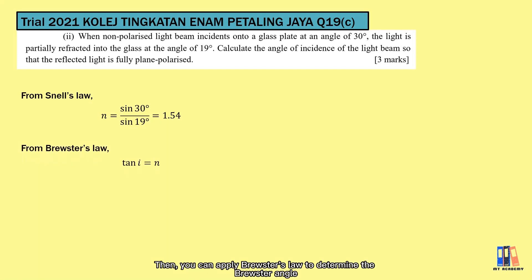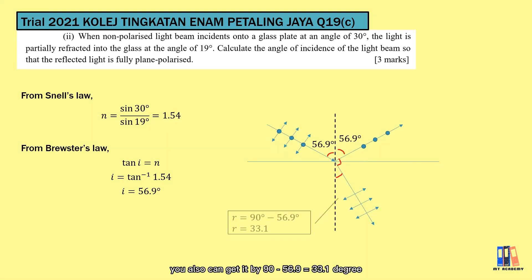Then we can apply Brewster's law to determine the Brewster angle so that the light is fully plane polarized. Let's apply the equation. You can get the answer is 56.9 degrees. For the refracted angle, you can also get it by 90 degrees minus 56.9 equals 33.1 degrees.